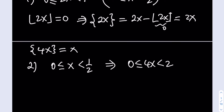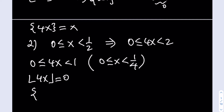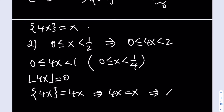Since x is between 0 and 1/2, that means 4x is between 0 and 2. We first look at 4x between 0 and 1, meaning x is between 0 and 1/4. In this case, the floor value of 4x is 0, so the fractional part of 4x equals 4x. Since fractional part of 4x equals x, we get 4x = x, so 3x = 0, meaning x = 0. That's our first solution.